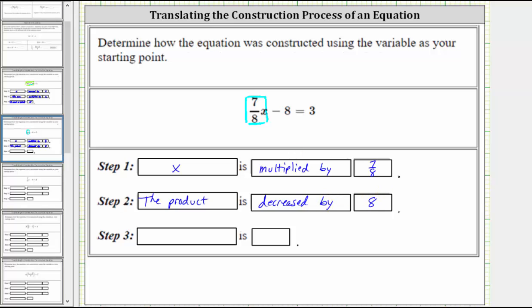After we decrease the product by 8, notice once again we have the entire left side of the equation. Therefore, we can say the result, or the difference from step two, is 3.